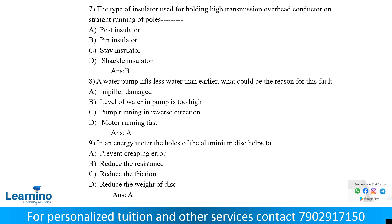In an energy meter, the holes in the aluminium disc help to prevent creeping error. Under no-load conditions, the disc tends to rotate continuously — this is creeping. The holes in the disc, along with a magnet on the side, stop the disc from rotating, preventing the creeping error. The answer is A.